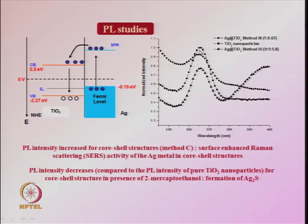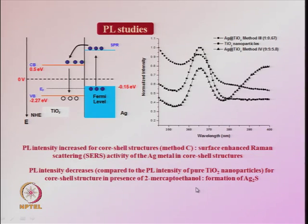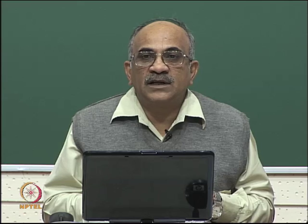This electron transfer mechanism enhances the photoluminescence, attributed to surface-enhanced Raman scattering (SERS) activity of the silver metal in core-shell nanostructures. The PL intensity of the silver–TiO2 core-shell structure is highest compared to bare TiO2. Adding mercaptoethanol leads to silver demetallization, which decreases both the SPR band intensity and the PL intensity.